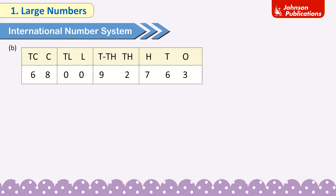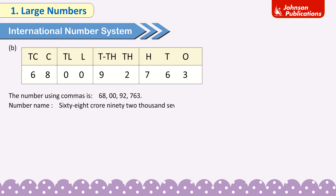B. Placing digits in the place value chart: TC=6, C=8, TL=0, L=0, TTH=9, TH=2, H=7, T=6, O=3. The number using commas is 68,00,92,763. Number name: 68 crores 92,763.